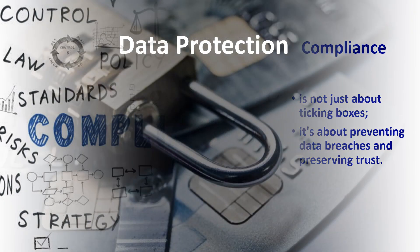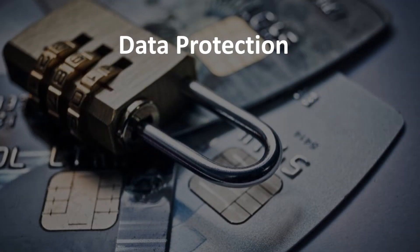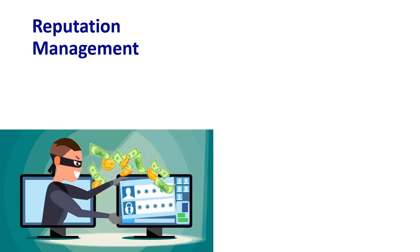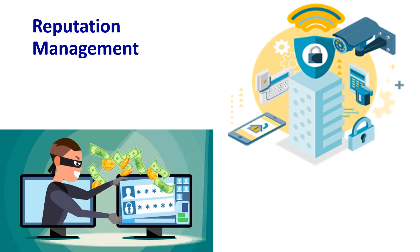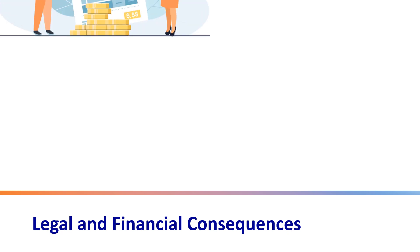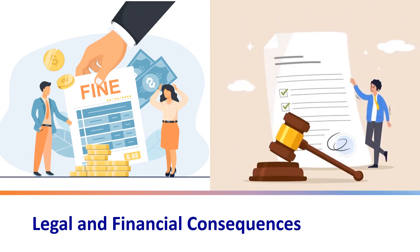Data protection: robust physical security measures make it exponentially harder for attackers to compromise payment card information, ensuring the sanctity of cardholder data. Reputation management: a data breach can severely damage an organization's reputation — robust physical security helps prevent such incidents, preserving trust and brand reputation. Legal and financial consequences: non-compliance with PCI DSS, including Clause 9, can result in significant financial penalties and legal repercussions. Correct physical security can mitigate these risks.